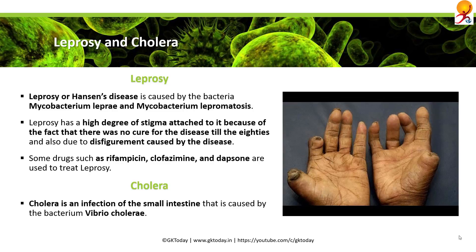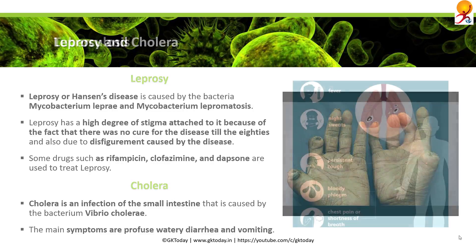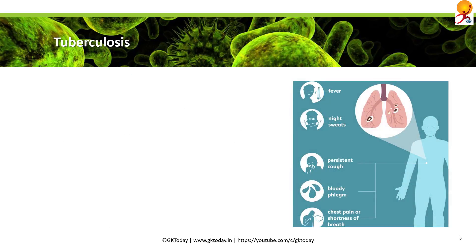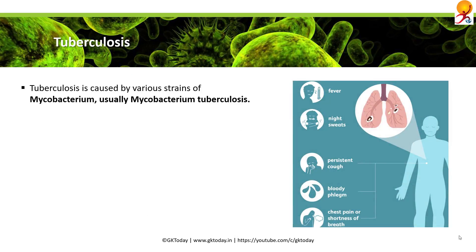Cholera is an infection of the small intestine caused by the bacterium Vibrio cholerae. The main symptoms are profuse watery diarrhea and vomiting. Tuberculosis is caused by various strains of Mycobacterium, usually Mycobacterium tuberculosis, which typically attacks the lungs but can also affect other parts of the body.